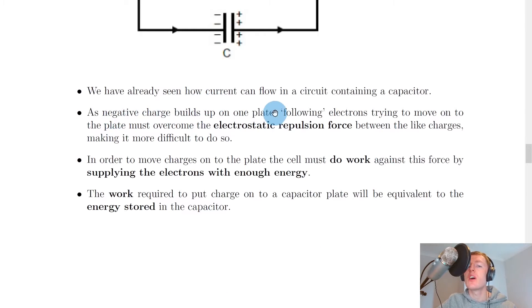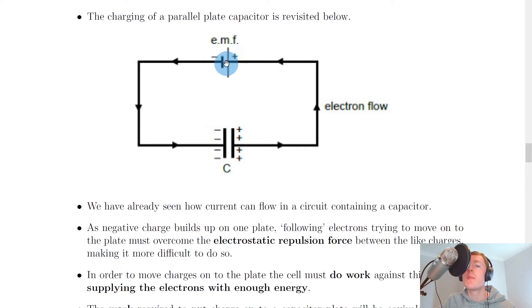We have already seen how current can flow in a circuit containing a capacitor. Just a reminder that electrons will flow from the negative terminal of the battery and build up on this plate here causing this plate to become negatively charged. And then because this plate is negatively charged, this causes the electrons on the right hand plate to be repelled away and move around the circuit to the positive terminal of the battery. This leaves behind a net positive charge on this plate. So we essentially end up with these two oppositely charged parallel plates and there's therefore an electric field set up between these plates going from the positive to the negative plate and therefore a potential difference exists across the capacitor. And remember the electrons cannot jump across this insulating layer of air.